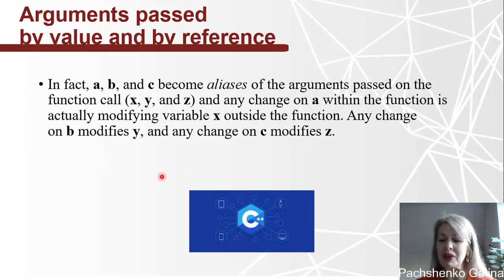In fact, A, B, and C become aliases of the arguments passed on the function call, X, Y, and Z. And any change on A within the function is actually modifying variable X outside the function. Any change on B modifies Y, and any change on C modifies Z.